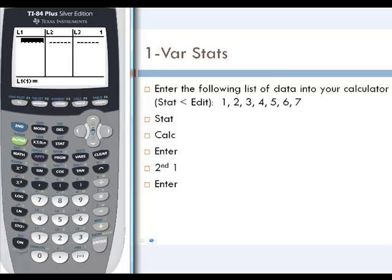So highlight the name of the list, clear, and enter will clear all of the list. And then we enter the data: 1, enter, 2, 3, 4, 5, 6, 7.